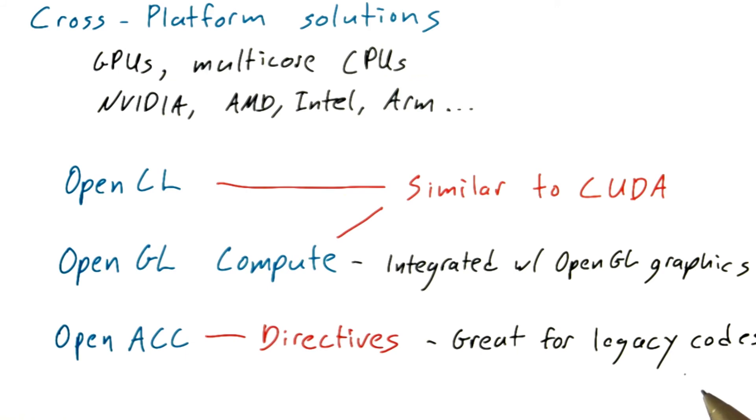OpenACC makes it easy and incremental to add parallelism to an existing code, and it'll be very familiar to programmers that are used to using OpenMP.